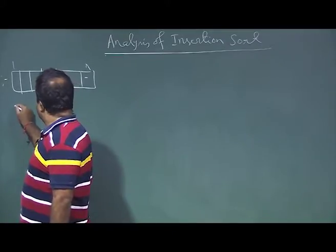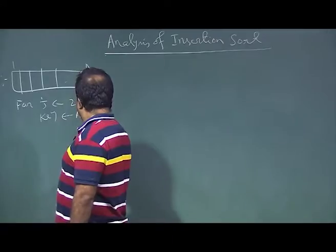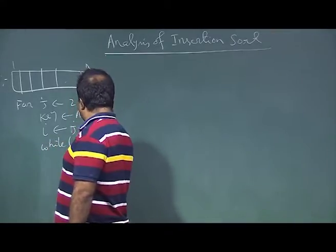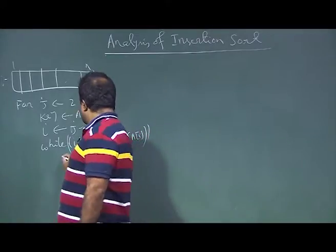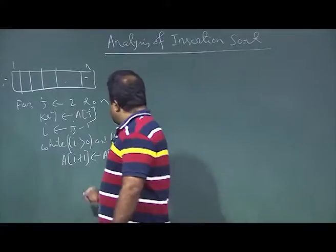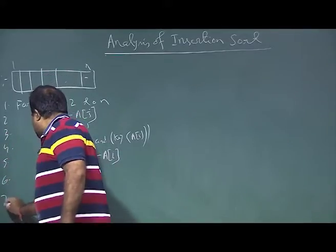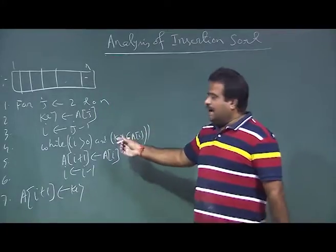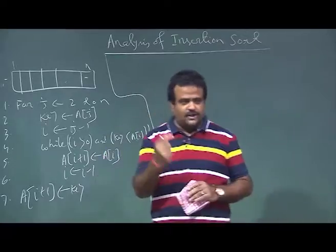The code for insertion sort: for j equal to 2 to n, we set key as a[j] and i pointing to j minus 1. Then we have a while loop: while i is greater than 0 and key is less than a[i], we do a[i+1] equals a[i] and decrement i by 1. Finally a[i+1] equals key. We've seen the runtime will depend on the size of the input, n.